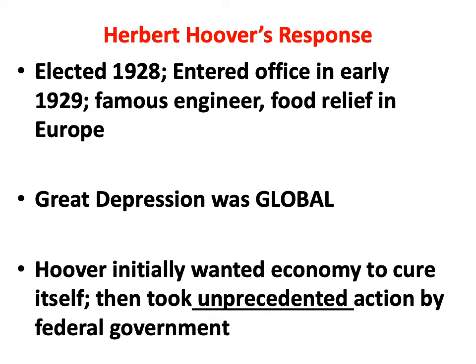Herbert Hoover was elected president in November 1928 and entered office in March 1929. A constitutional amendment later changed the inauguration date from March to January. Hoover was well-known in the United States as a very famous engineer who prided himself on his efficiency. At the end of World War I, when there was massive hunger in Europe, he managed the entire food relief effort and was a great success — hundreds of thousands or perhaps millions of people did not starve thanks to his managerial capabilities. He was a Republican president.